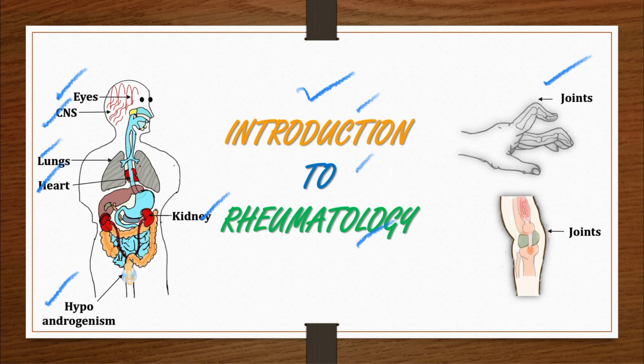Rheumatic disease also represents something very specific, like India's flag. Rheumatic disease also has a specific pattern of progress and recognition. On the basis of that, they are categorized as symmetric or asymmetric, inflammatory or non-inflammatory, and acute or chronic rheumatic disease.